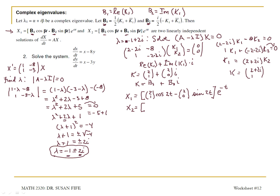Minus B2 sine beta t. B2 is the vector 2, 0, sine 2t. And then for X2, it's B2 cosine beta t, B2 is the vector 2, 0, cosine 2t, plus B1 sine beta t. B1 is the vector 2, 1, sine 2t, times e to the negative t.